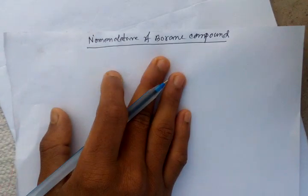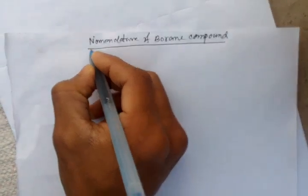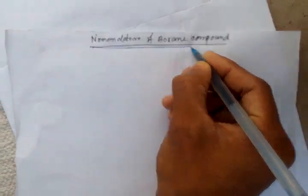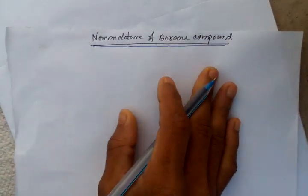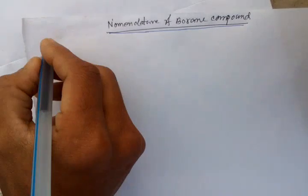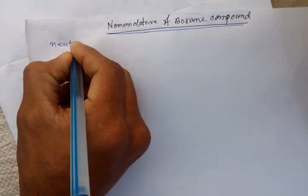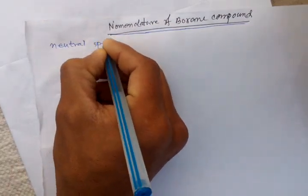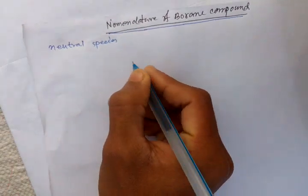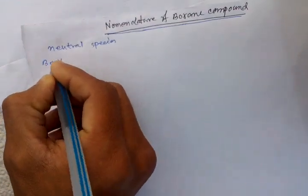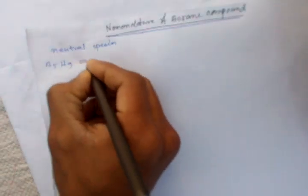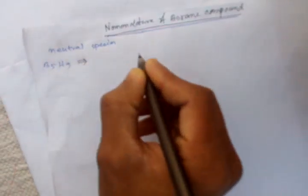Hello friends, today we'll discuss the nomenclature of boron compounds. For neutral species, as an example, B5H9, the nomenclature of this system is...